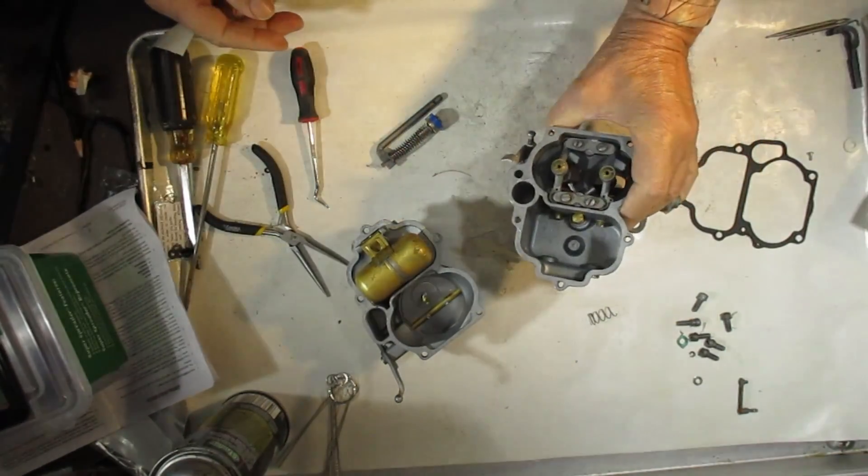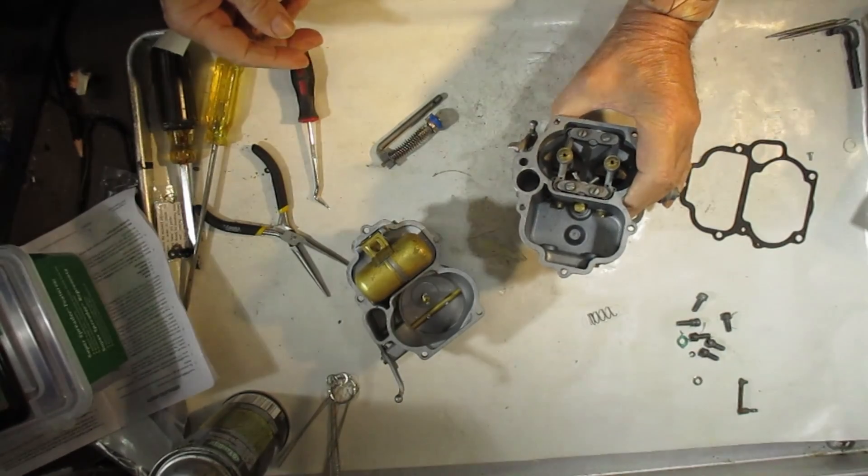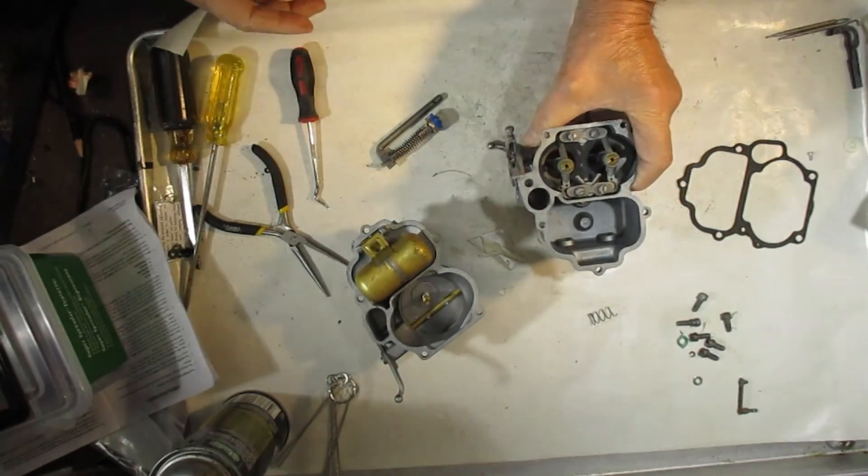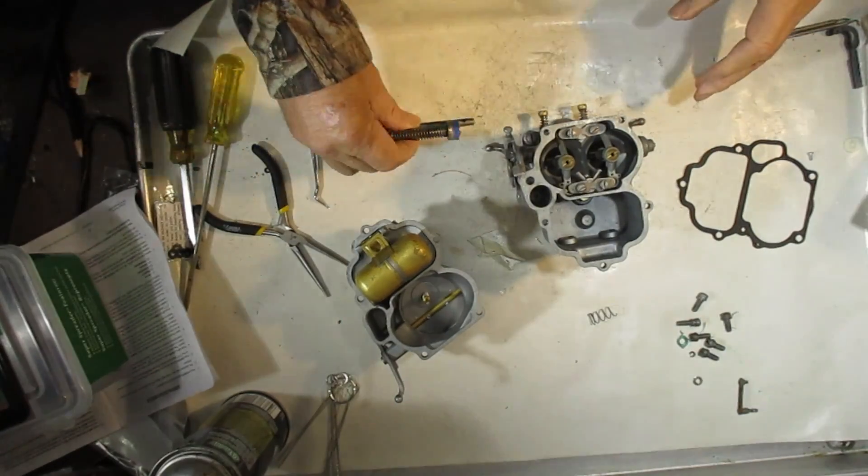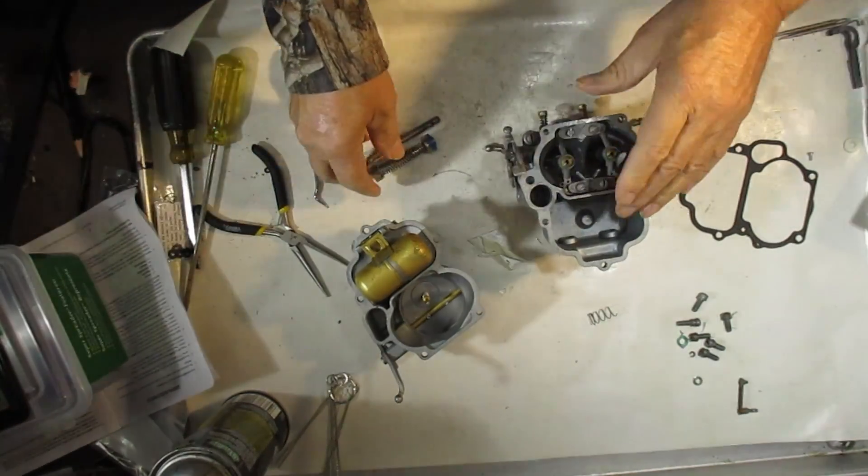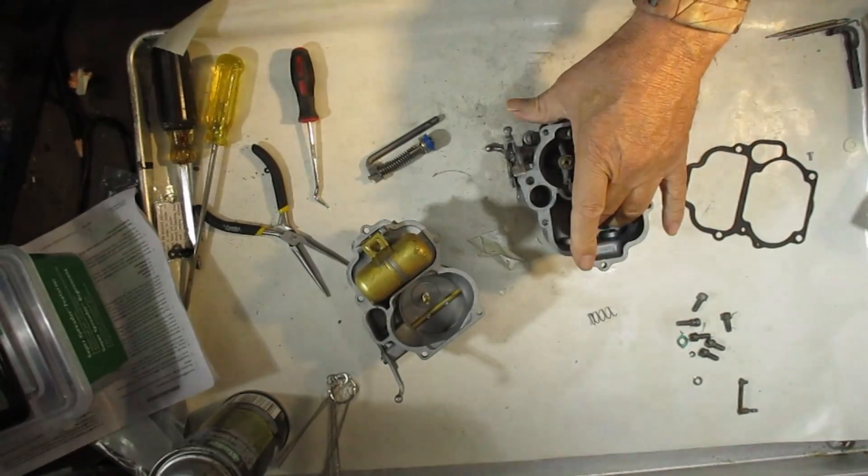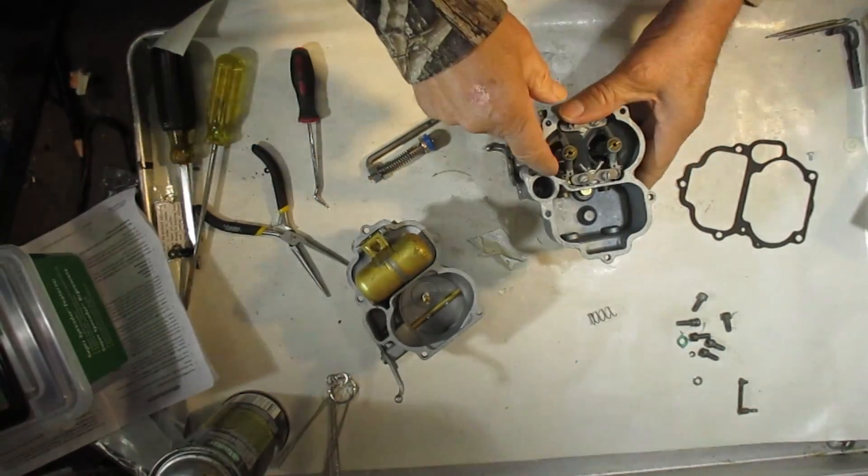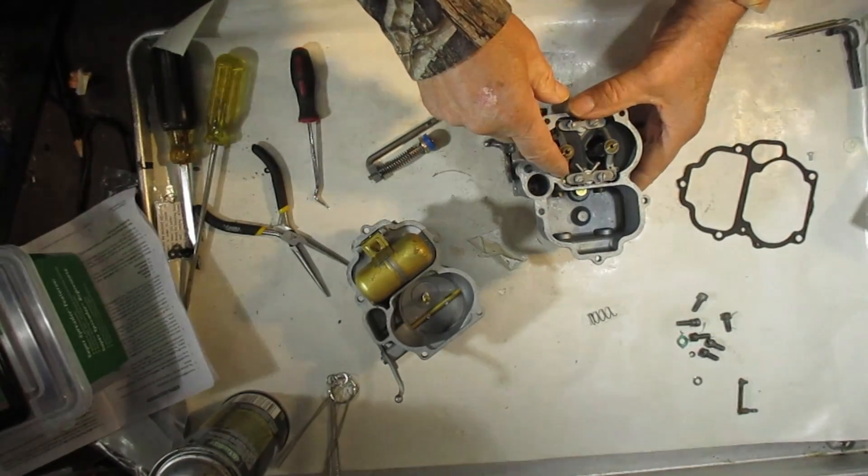But there's two holes down at the bottom. One is for the check ball for the intake and the other one's for the outtake. The pressure of the fuel going down will force that check ball to close so that it doesn't force fuel back into the carburetor bowl. It goes through the passage and through the discharge right here.